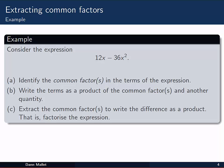Let's check out this example. We've got an expression here, 12x minus 36x squared. And what we're asked to do is first identify the common factors in the terms in the expression. Then write the terms as a product of the common factors, and any other quantity that we need to make the terms that we've got. And then finally extract the common factors.